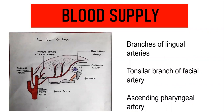Always remember: name of the artery, its branch, area of supply. Lingual artery is a branch of external carotid artery. Its branches are deep lingual artery — anastomoses with deep lingual artery at the tip of the tongue from the other side — and dorsal lingual artery, which supplies the anterior two-thirds dorsum. Tonsillar branch of facial artery — facial artery is again a branch of external carotid artery — supplies posterior one-third. Ascending pharyngeal artery also supplies posterior one-third. If you write this much, you will get maximum marks.